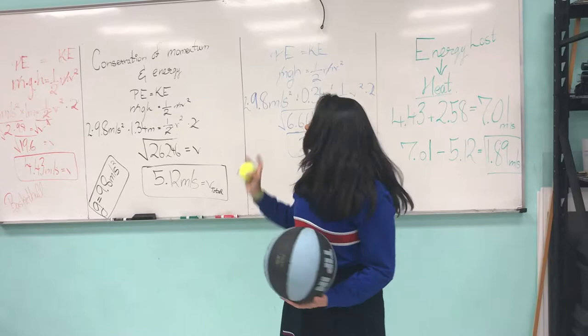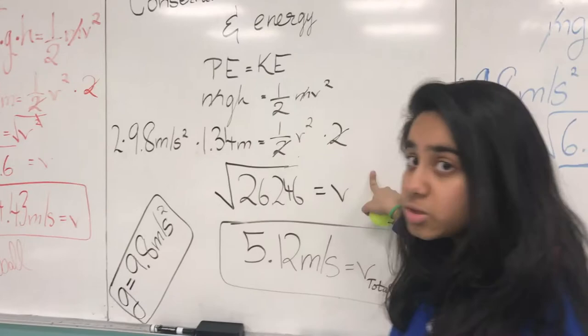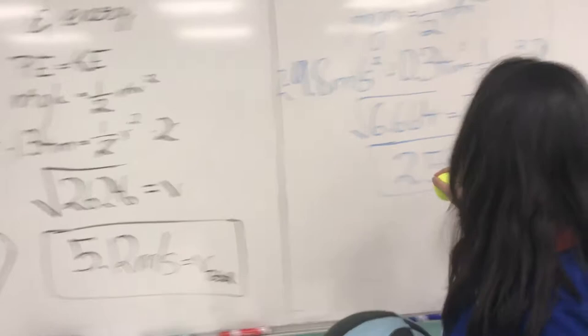Over here I have calculated the velocity of the basketball when dropped. Over here I have calculated the total velocity of both the balls, the basketball and the tennis ball. Over here I have calculated the velocity of the tennis ball.